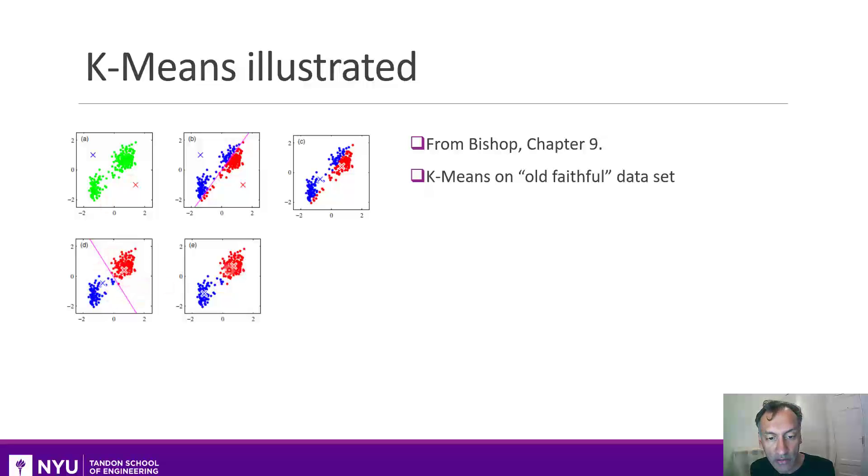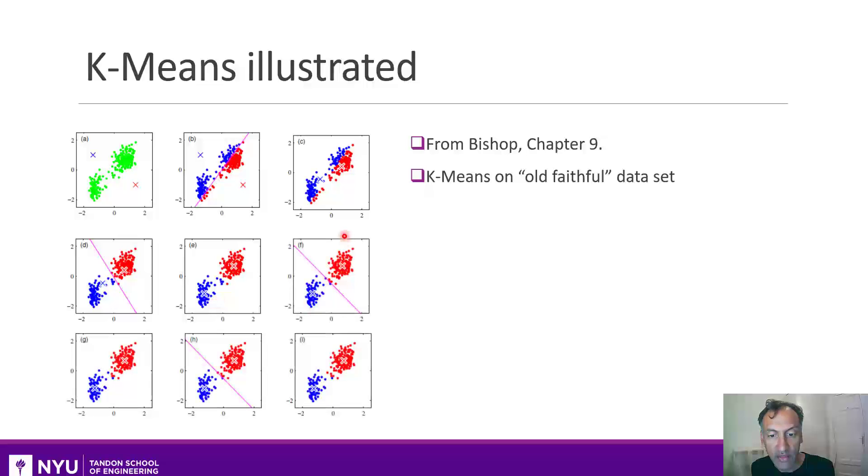Then, you re-update the centroids again and we get into the centers of these clusters. And then, you keep on repeating the process. And after this ninth step here, we get something that's very close to the way that you would want to visually cluster this. So, in this case, it works very well even though we started with a very bad initial condition.